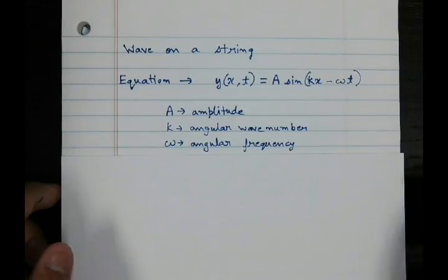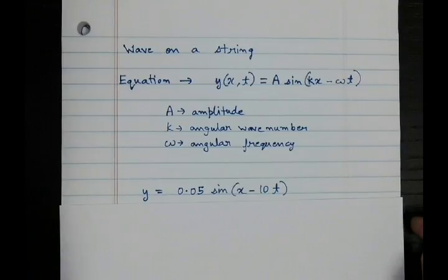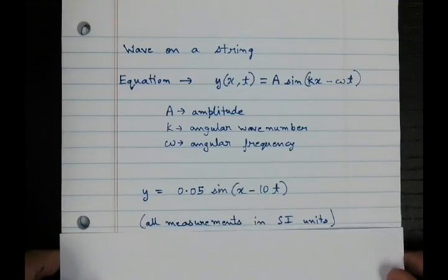We can use this wave equation to get all information about the wave. Let's take an example. Let us say that we have been given a wave equation, which is y = 0.05 sin(x - 10t). All measurements are done in SI units.